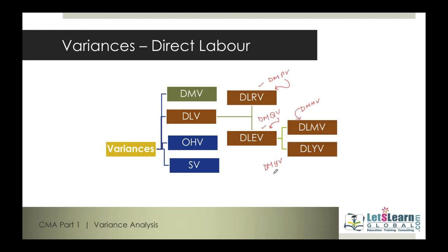In direct material yield variance, the output was not the same from the given mix of input. Here, for a given mix of labor hours, the output to be completed is not the same — so direct labor yield variance takes place. When you are through with these four variances from direct material, just apply the same concept in calculating the labor variances. There is nothing new in the labor variances to learn.